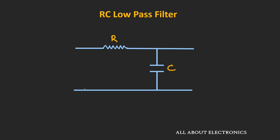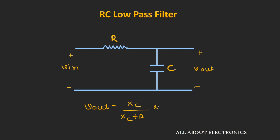The first-order RC low-pass filter can be designed by connecting a resistor and capacitor in series. In this circuit, the input is provided at one end and the output is taken across the capacitor. The output can be given as Xc divided by (Xc + R) into Vin, where Xc is the reactance of the capacitor and Xc equals 1 over ωC.